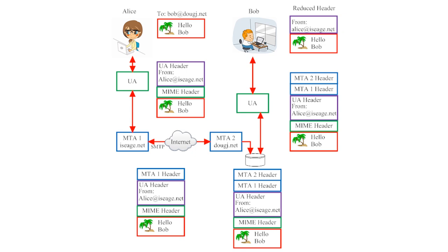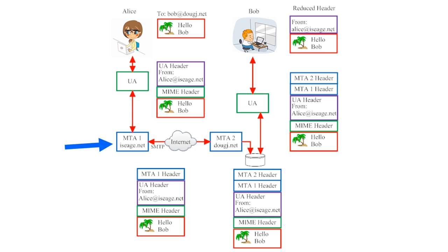Let's examine one more illustration that shows how email systems work. This one shows many of the same things we just saw, but highlights some different details. In this illustration, we see a user, Alice, sending a message to another user, Bob. Her message is composed of a short text message that says "Hi, Bob," and then there's a picture of a palm tree. Alice sends this email using her user agent, which relays the message to a message transfer agent. That MTA sends the email across the internet to a second MTA, which holds the email for Bob until his user agent downloads all of his new incoming emails. Bob can then view the email through his user agent.